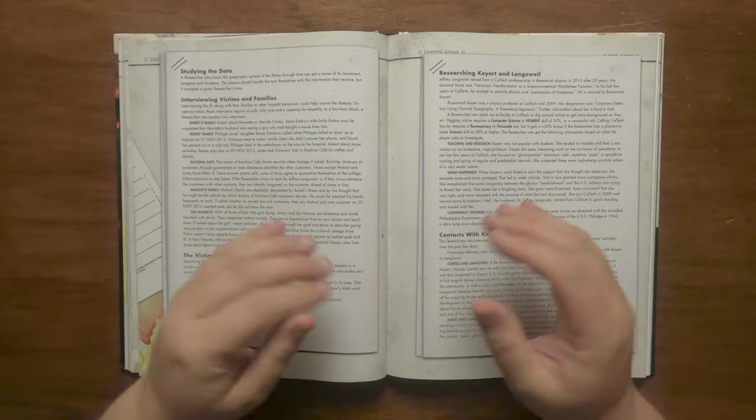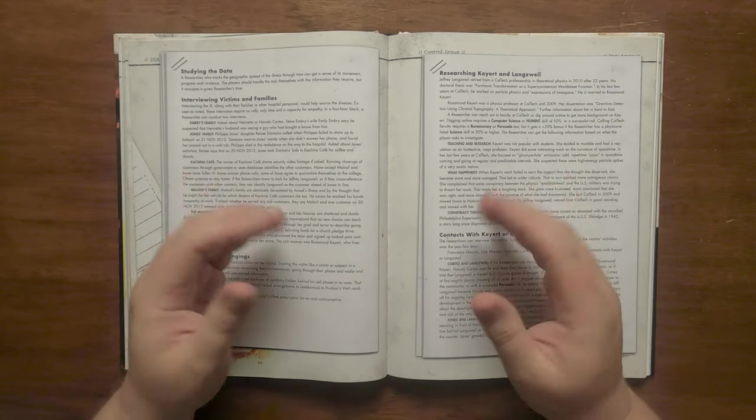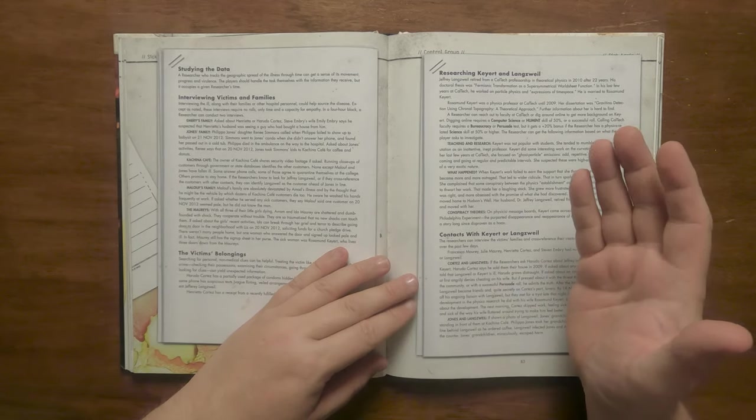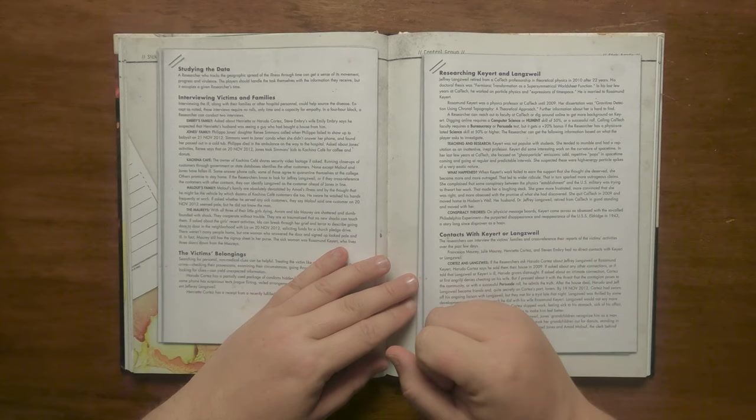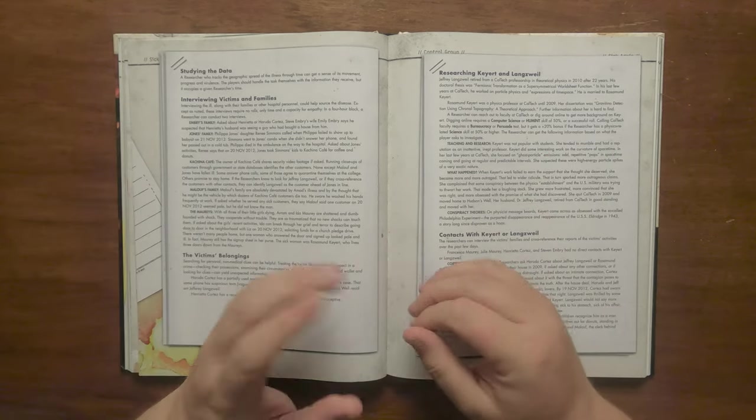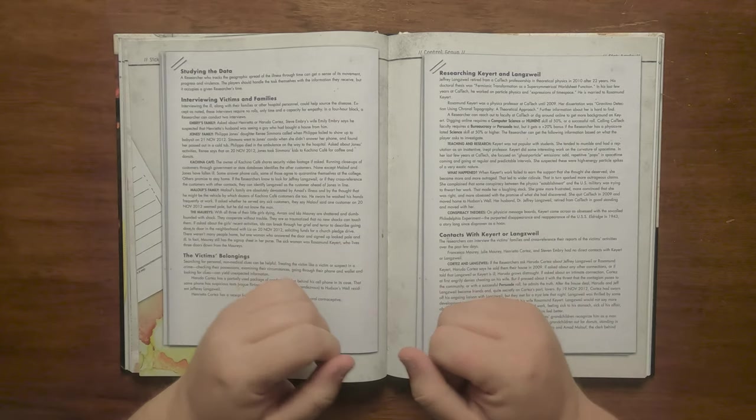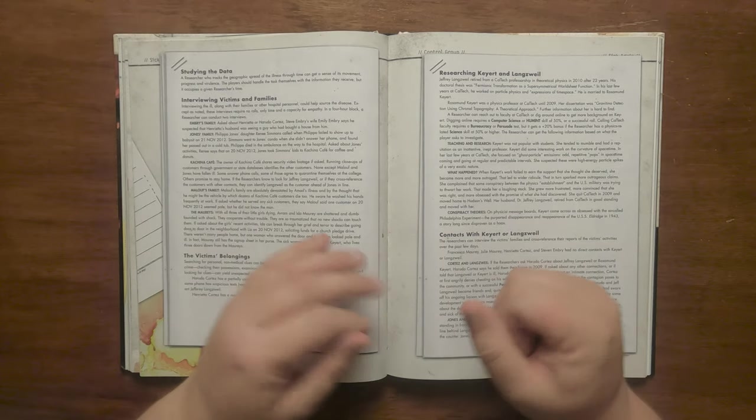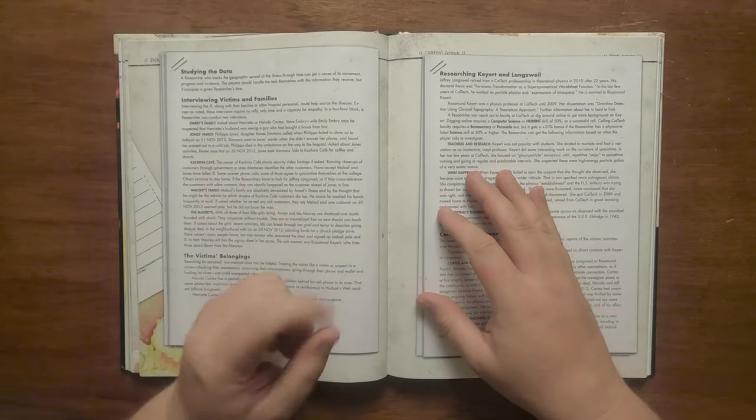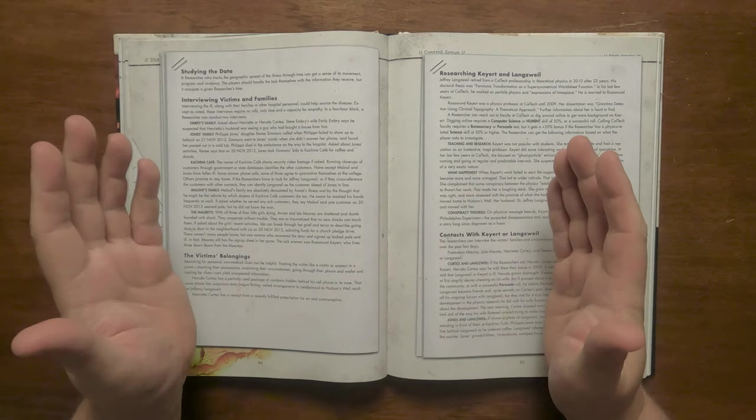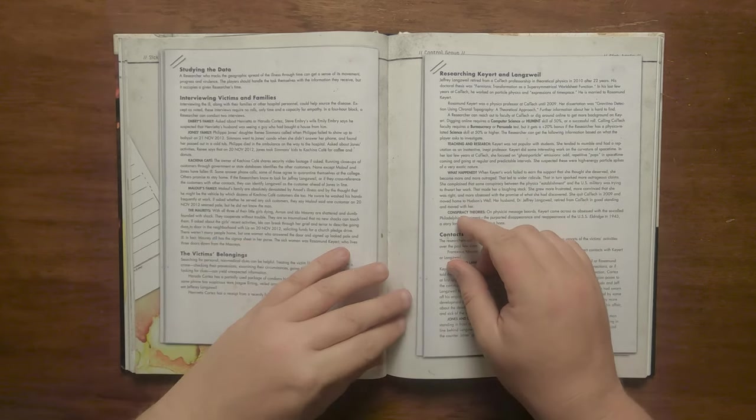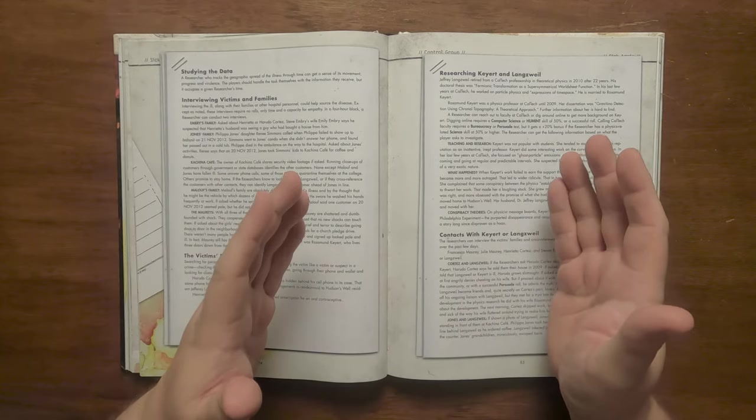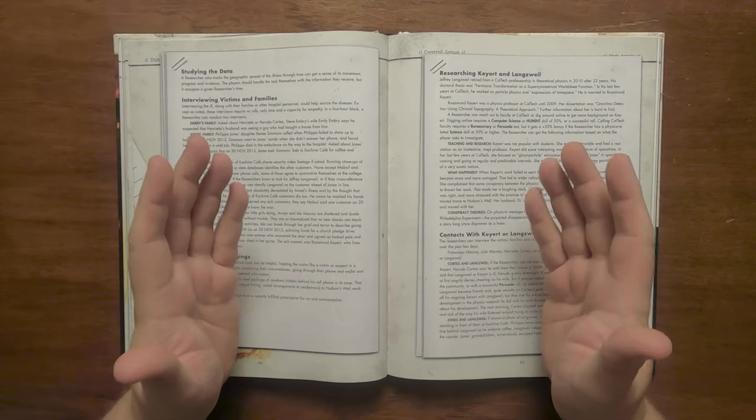Ahmad Malouf's family are devastated by his illness, thinking he was the reason people got sick despite him swearing he took all precautions for cleanliness and safety. He told them that one of the customers looked pale, a man he didn't know. One family had lost two children, the Maoris. They are numb with shock. If pressed to break through their grief they can remember going door to door to solicit funds for a church pledge drive. She'll remember one woman opening the door and looking pale and ill. She lives three doors down from them, Rosamund Kyat. Should the belongings of the victims be searched, there is evidence in the form of suspicious texts from Herudo Cortez who was having an affair with Hudson Well resident Geoffrey Langsville.